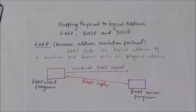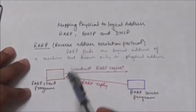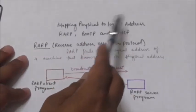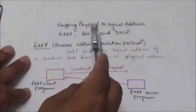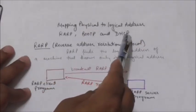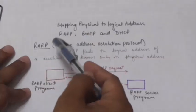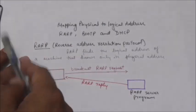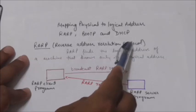Hello friends, welcome back. In this tutorial we will study about mapping physical address to logical address. There are three protocols for this: RARP, Bootstrap Protocol, and DHCP. In this tutorial we will study only about two protocols: RARP and Bootstrap Protocol.